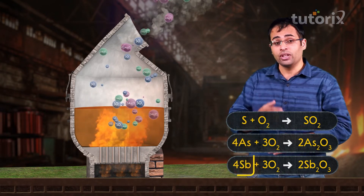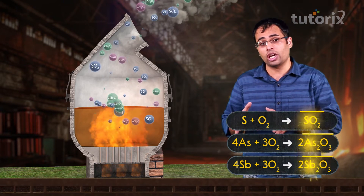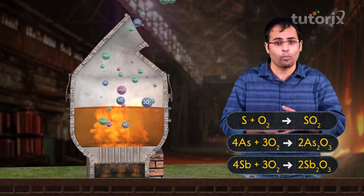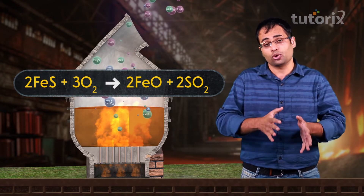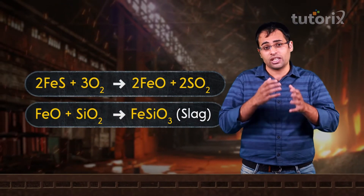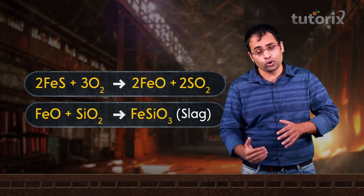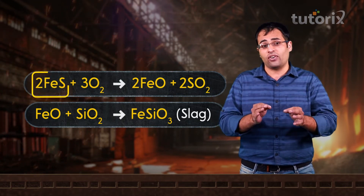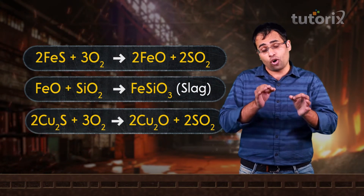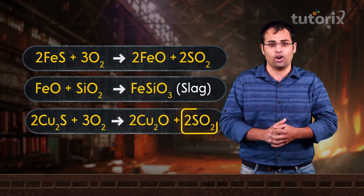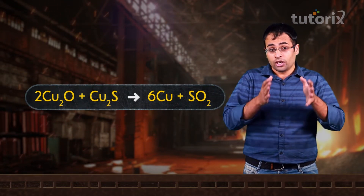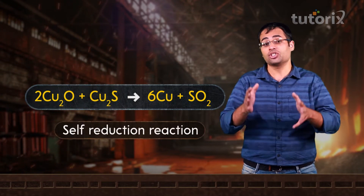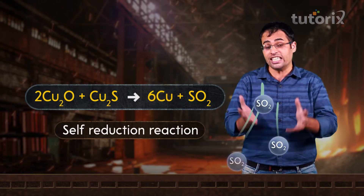From the bottom of the furnace, hot air mixed with sand or silica as flux is blown in. With increase in temperature, any leftover impurities of sulphur, arsenic and antimony react with oxygen from the hot air blast to convert into their volatile oxides and these escape as gases from the top of the furnace. The leftover ferrous sulphide reacts with oxygen to convert into ferrous oxide, which reacts with acidic flux silicon dioxide to form ferrous silicate slag. After most of the ferrous sulphide is consumed, cuprous sulphide also reacts with oxygen to convert into cuprous oxide and sulphur dioxide gas. Then the most important reaction of this complete process occurs: cuprous oxide reacts with cuprous sulphide in a self-reduction reaction, leading to the formation of pure copper and releasing sulphur dioxide gas.